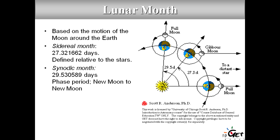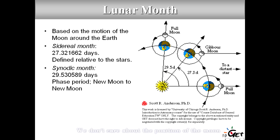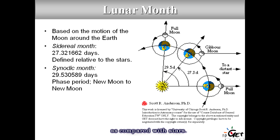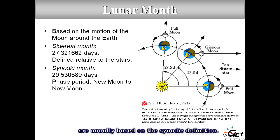On Earth we usually use the synodic definition — we don't care about the Moon's position relative to stars. What we want to know is when the new Moon occurs. So our months are based on the synodic definition.